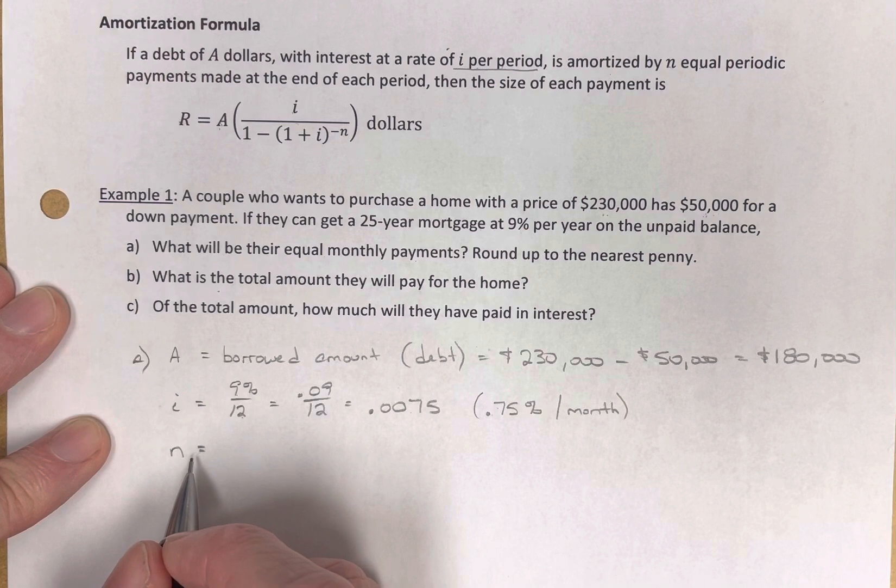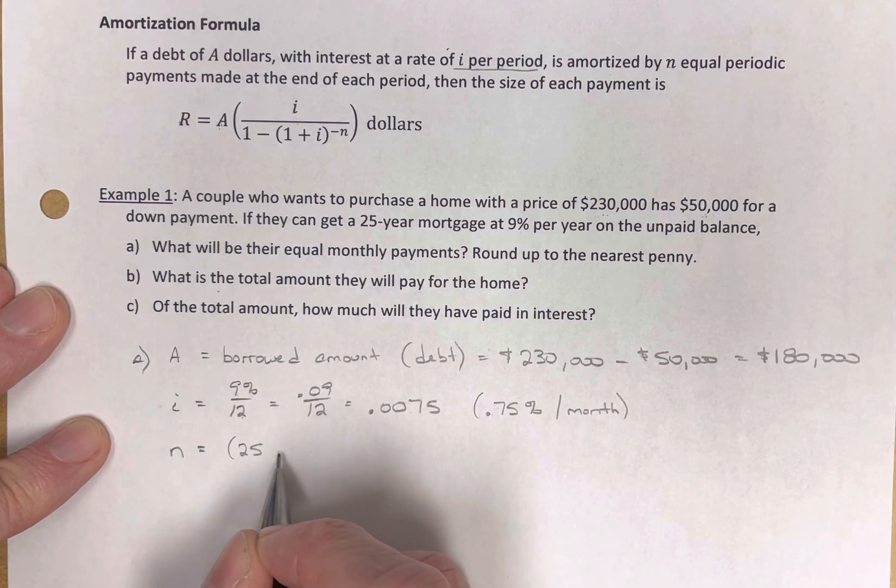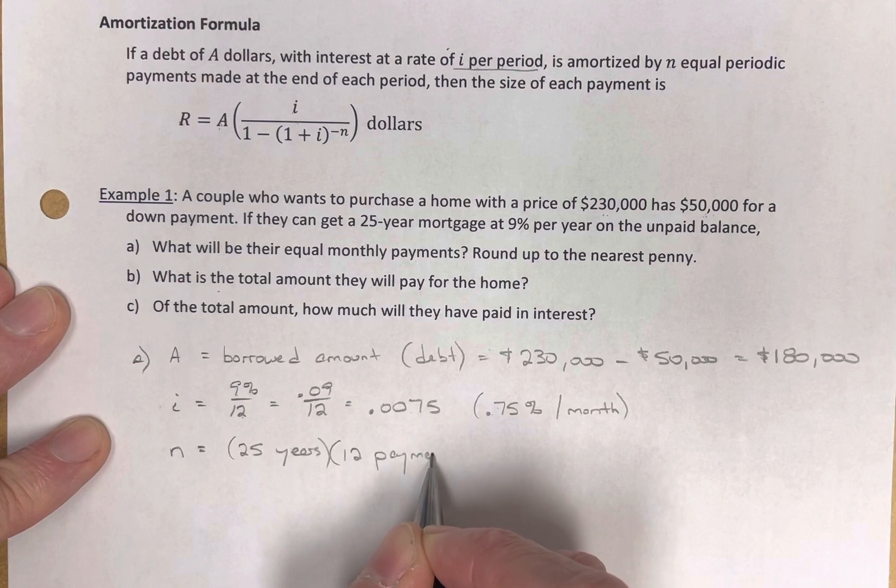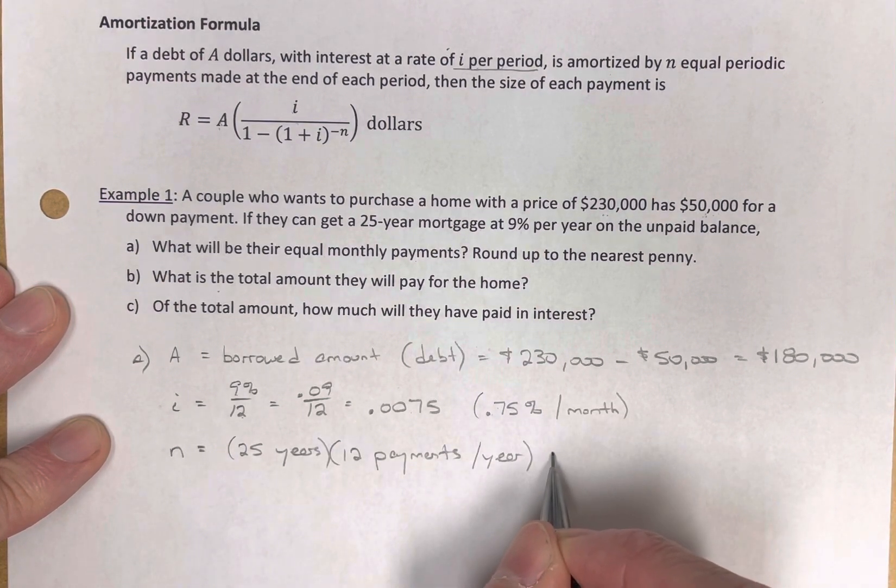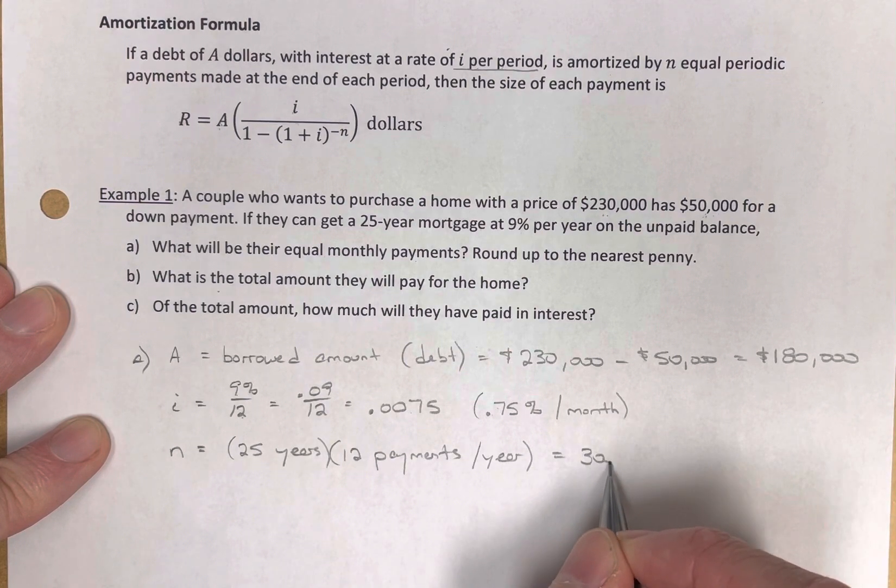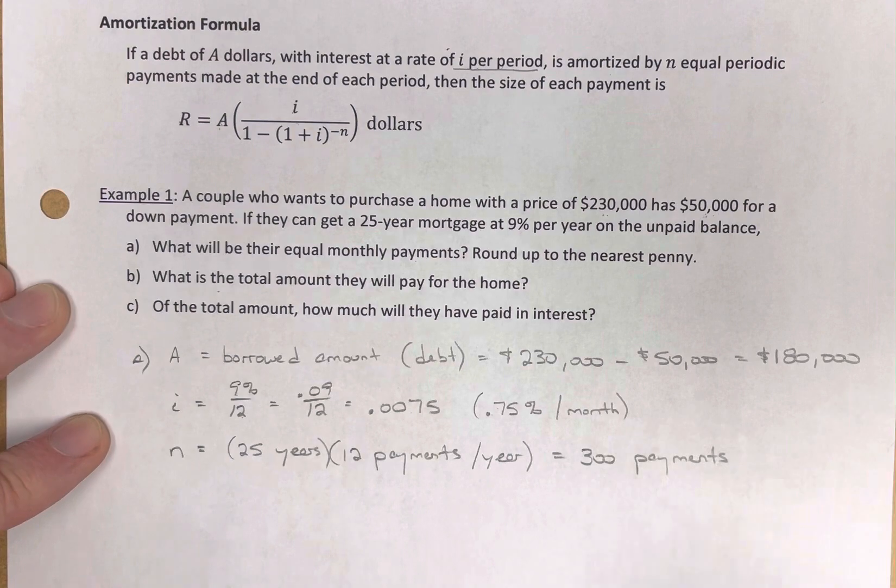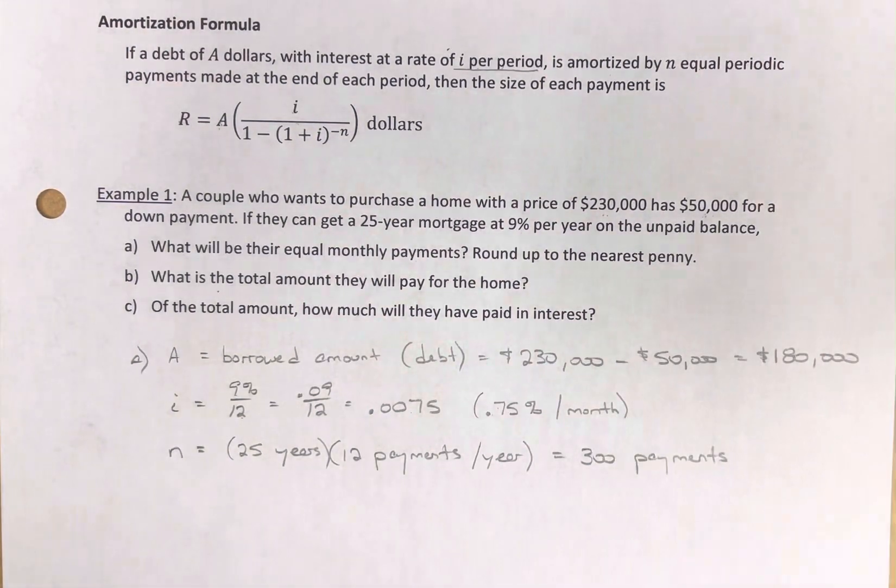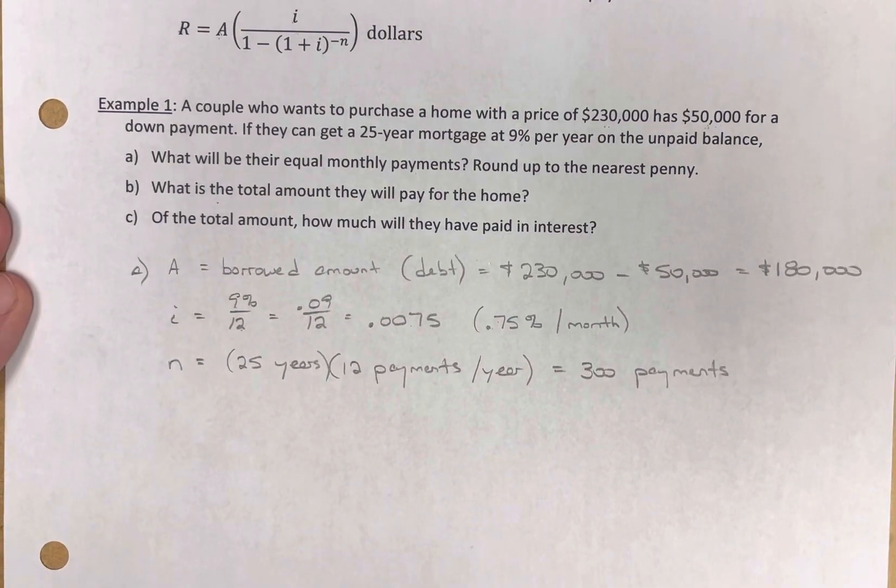And how many equal payments? Well, we've got 25 years worth of payments. And we're doing 12 payments per year. So we're talking about 300 payments. 300 months. This is going to take place over. They're making 300 payments, one per month for 25 years. 300 payments.